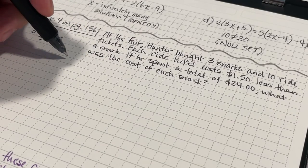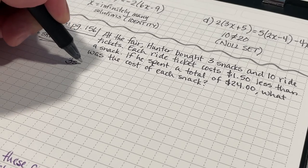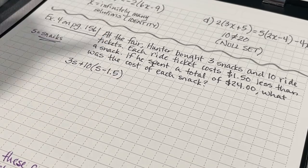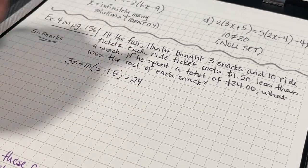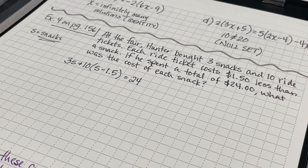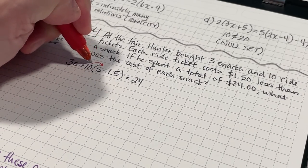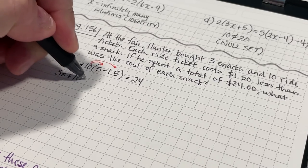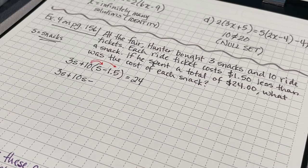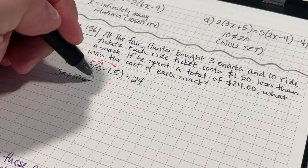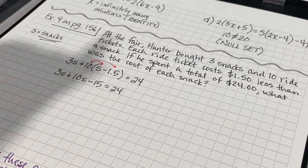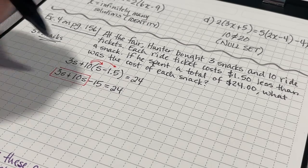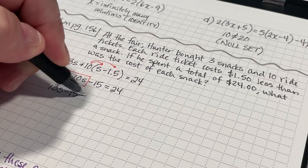I know that he bought 3 snacks plus he bought 10 tickets. The tickets were the cost of a snack minus $1.50. And all of that equals $24. I'm going to use my distributive property here to start solving the problem. I get 3S plus 10S minus 15 equals 24. I'm going to do some combining of like terms. I get 10S plus 3S, which is 13S minus 15 equals 24.